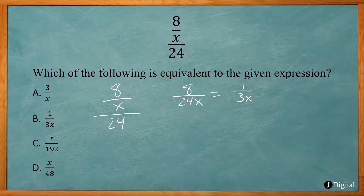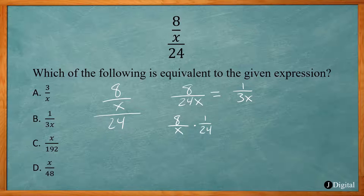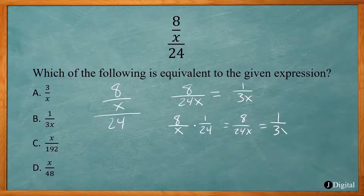Another way to think of this: 8 over x divided by 24 means you multiply by the reciprocal, times 1 over 24. So now we have two fractions — 8 over x times 1 over 24 — that becomes 8 over 24x, which reduces down to 1 over 3x.